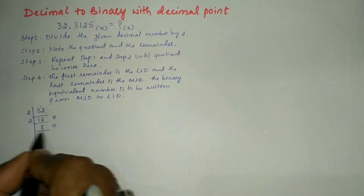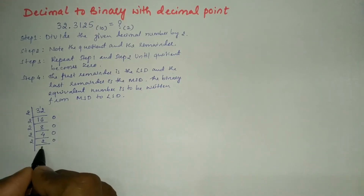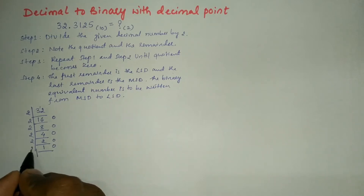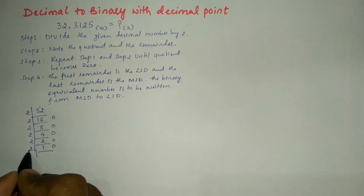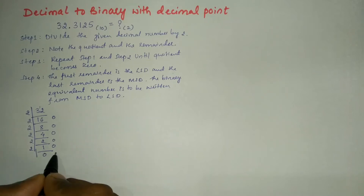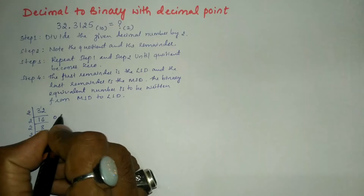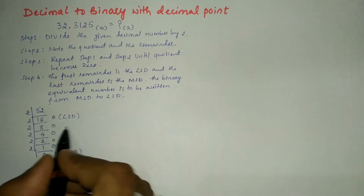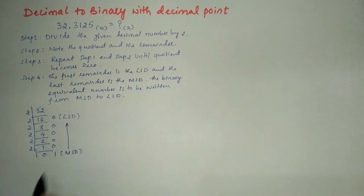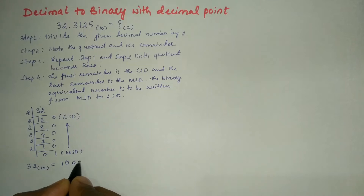Continuing: 8 ÷ 2 = 4 remainder 0; 4 ÷ 2 = 2 remainder 0; 2 ÷ 2 = 1 remainder 0; 1 ÷ 2 = 0 remainder 1 — quotient is now 0, so we stop. Writing remainders from most significant to least significant digit: 32 base 10 = 100000 base 2.